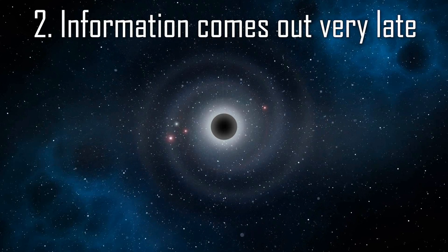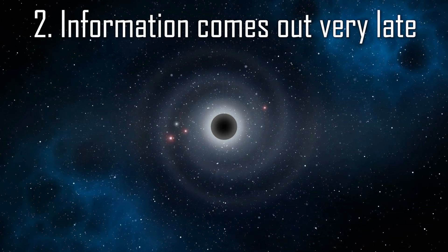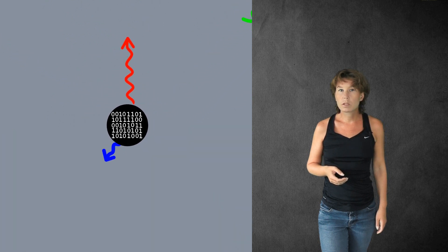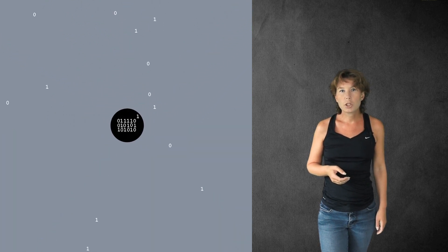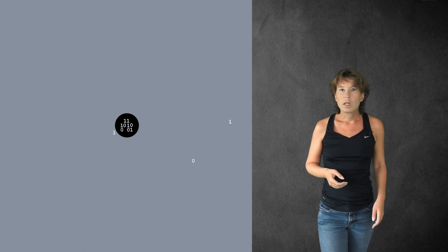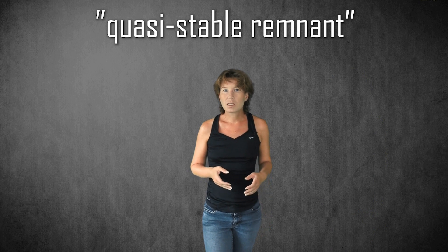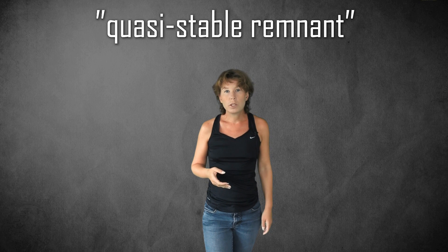Second, information comes out very late. Instead of just stopping to evaporate when quantum gravity becomes relevant, the black hole could also start to leak information in that final phase. Some estimates indicate that this leakage would take a very long time, which is why the solution is also known as a quasi-stable remnant. However, it is not entirely clear just how long it would take. After all, we don't have a theory of quantum gravity. The second option removes the contradiction because the information does eventually come out.